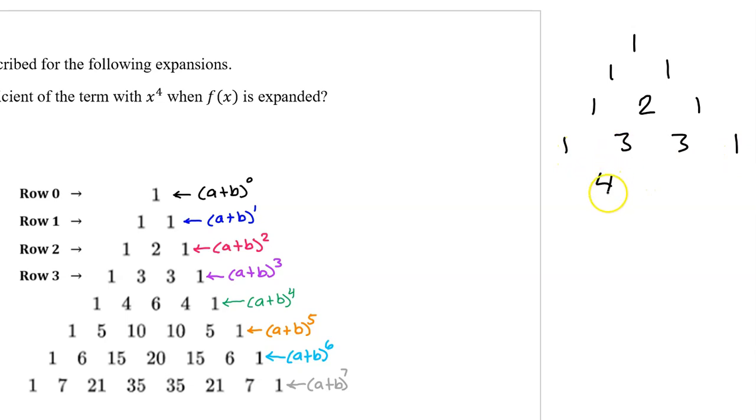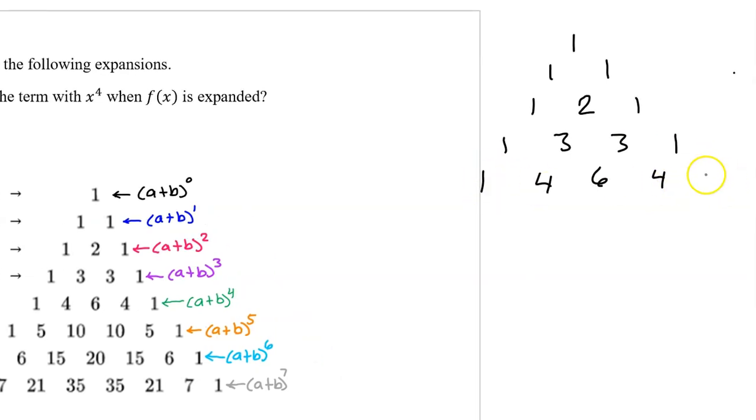1 plus 3 is 4. 3 plus 3 is 6. 3 plus 1 is 4. 1's on the ends. So notice how we're getting the same numbers as you see on Pascal's triangle. And we could keep going for as many rows as we needed.